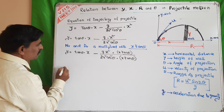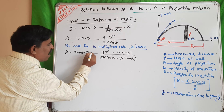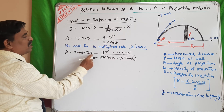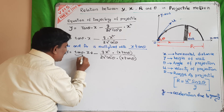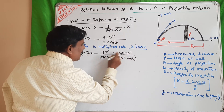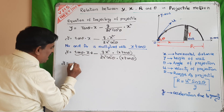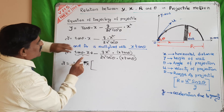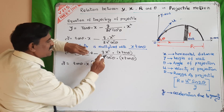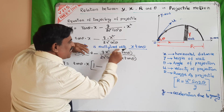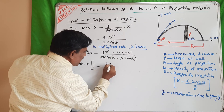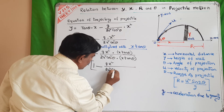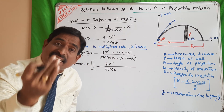Now, please listen here. In the second term, the numerator and denominator are both multiplied by x tan theta — writing 1 in those positions makes no change in value. Then, x tan theta is taken as a common factor. Y is equal to tan theta into x taken common, and the remaining term is 1 minus g x² divided by 2u² cos² theta, with x tan theta taken outside.